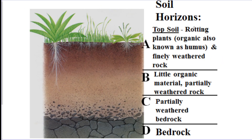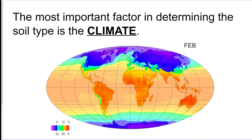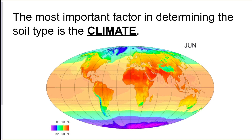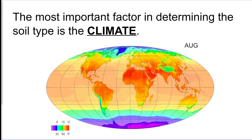Soil: the topsoil has the humus layer — the organic layer where plants decay. This layer only exists where the environment supports plants and vegetation, so arid or dry environments won't have a humus layer. The most important factor in determining soil type is the climate of the area, essentially whether it's dry or moist.